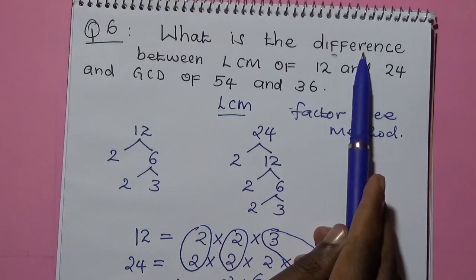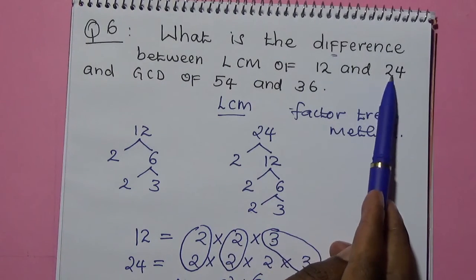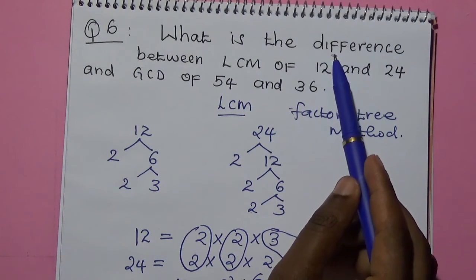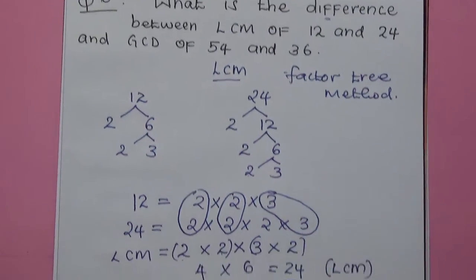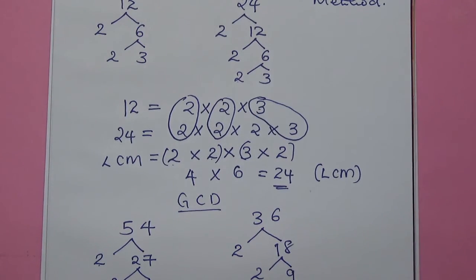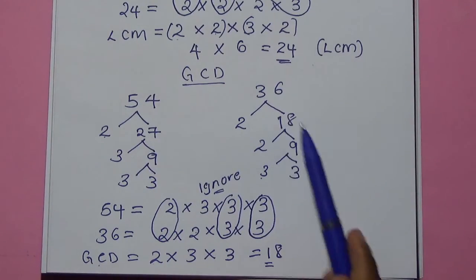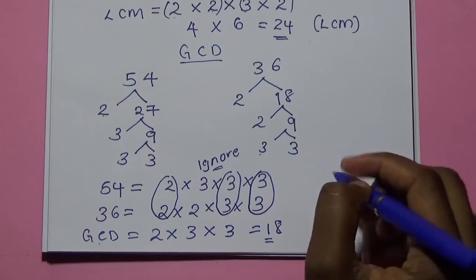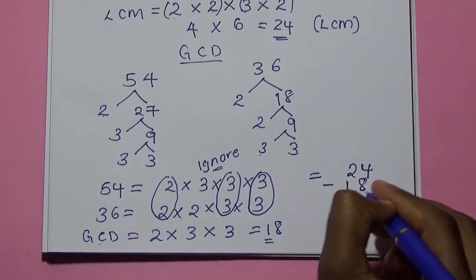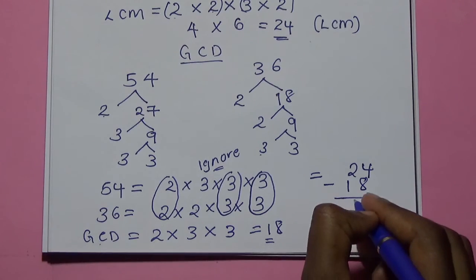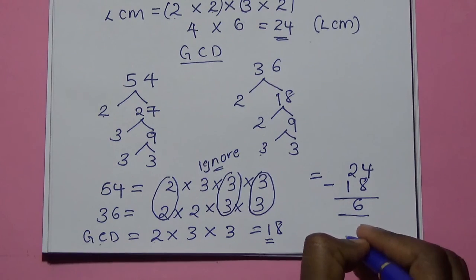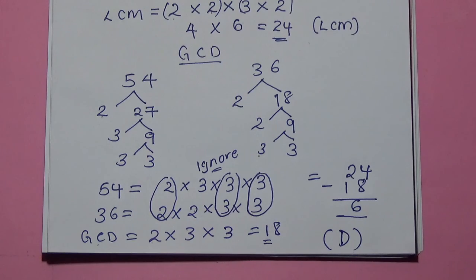The question asks for the difference between the LCM of 12 and 24 and the GCD of 54 and 36. Difference means subtraction. The LCM of 12 and 24 is 24, and the GCD of 54 and 36 is 18. Therefore, we subtract: 24 minus 18 equals 6. The correct answer is 6, which is answer D.